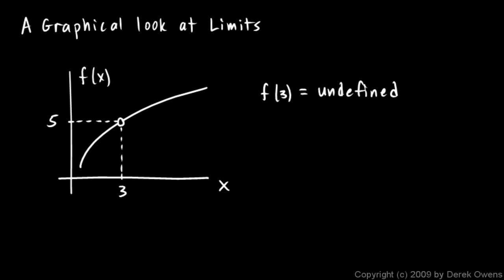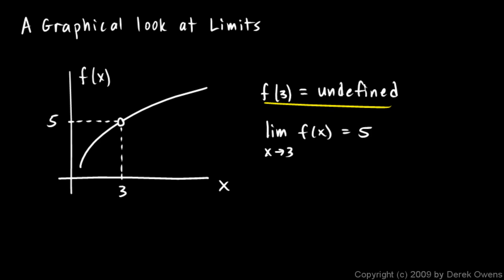However, if our x values get really close to 3, then we're getting really close to that hole but not quite at it, and the y values are getting really close to a value of 5. So we can still say the limit as x approaches 3 of f(x) is equal to 5. The limit can exist even if the function doesn't exist.